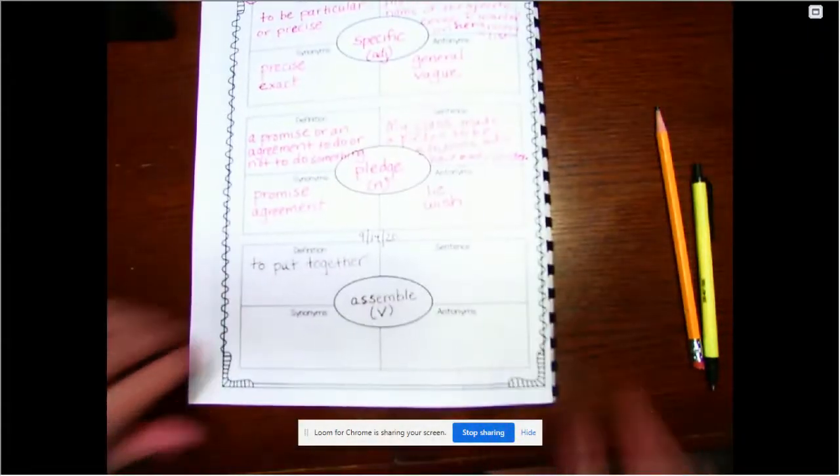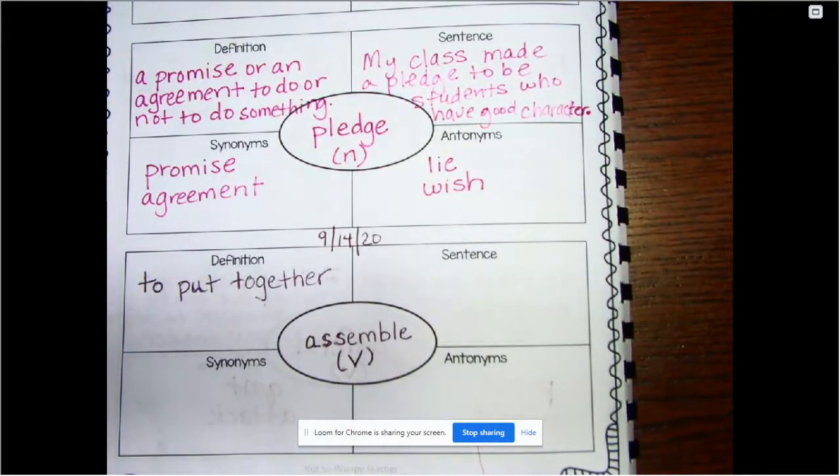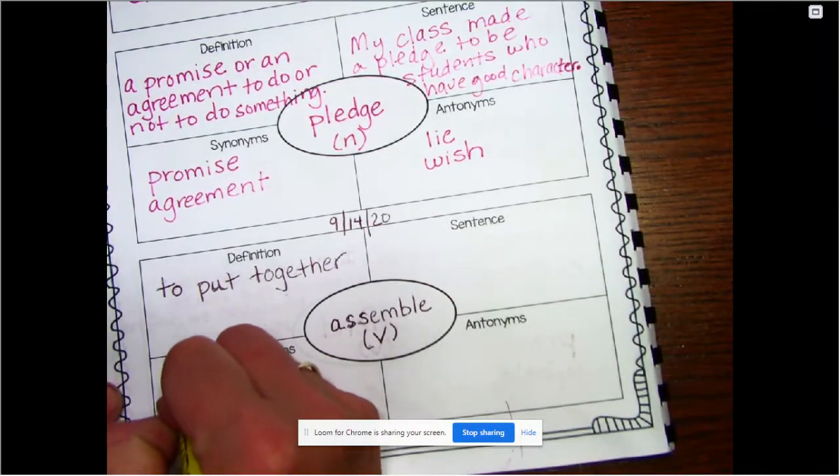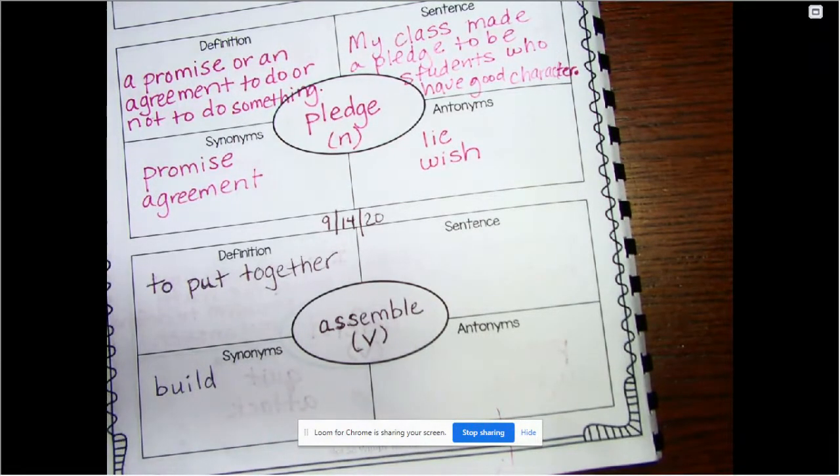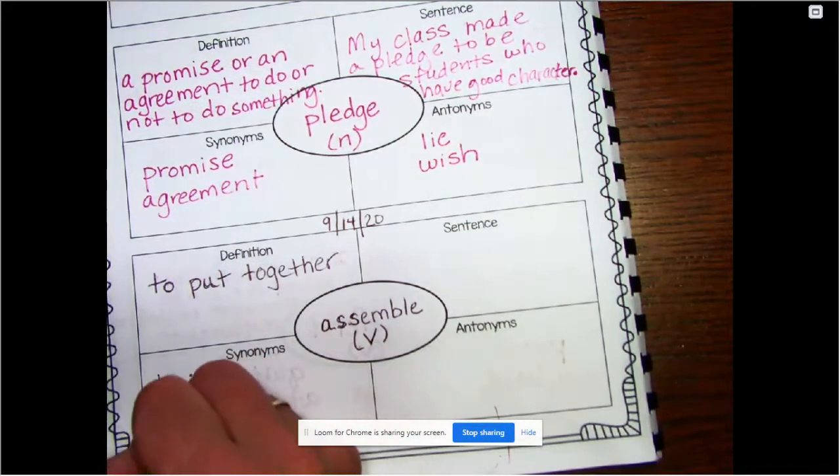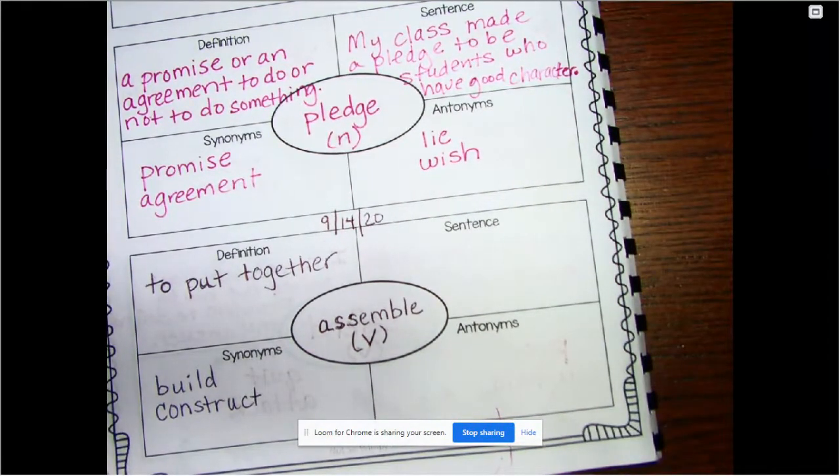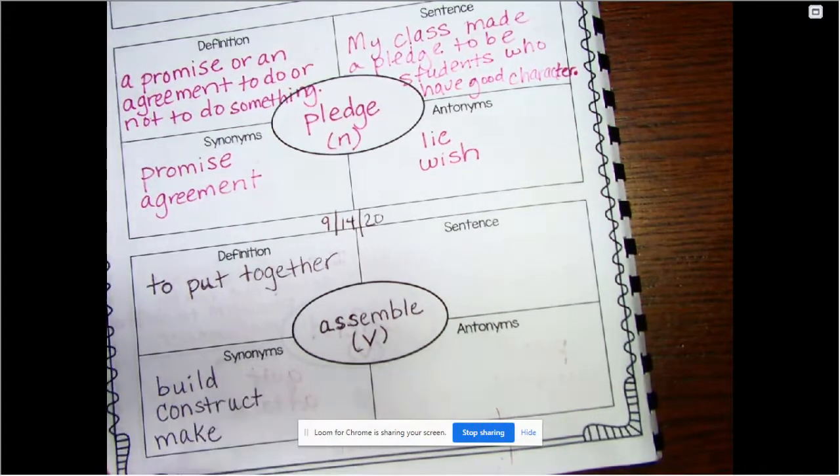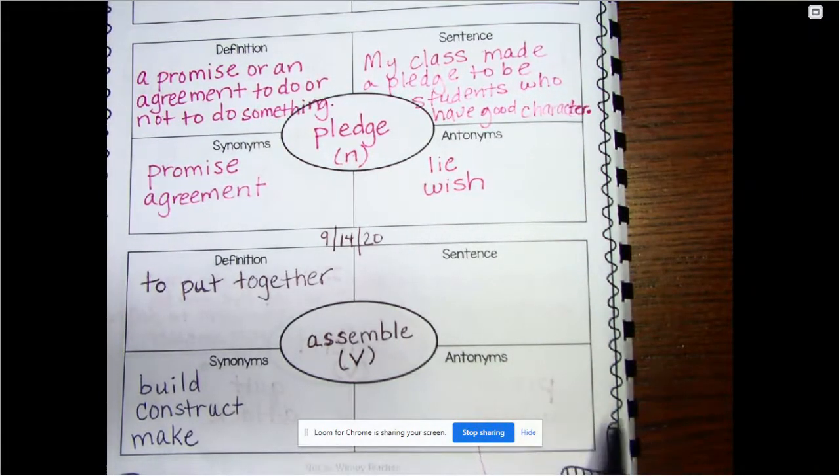Where we have the word assemble. Let's bring it in a little closer. All right, so we have the word assemble, to put together. Let's go ahead and write down synonyms, a word that is similar to the meaning assemble. So build might be one. I can't wait till we're together and you can give me the answers that you think we should put in here. Another one would be construct, possibly make. So if you're going to build something, construct something, make something, it's the same as you are going to assemble something. So the opposite would be...